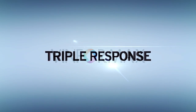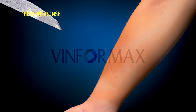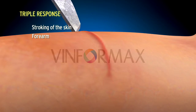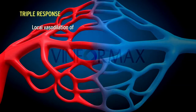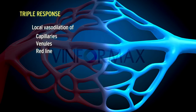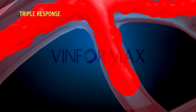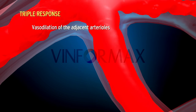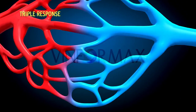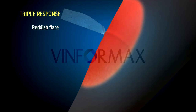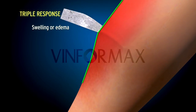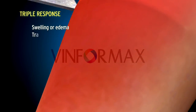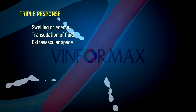Triple response is the demonstration of hemodynamic changes in inflammation. It involves firm stroking of the skin of the inner aspect of the forearm with a blunt point. The reaction consists of: a red line — local vasodilation of capillaries and venules appearing within a few seconds; a bright reddish flare or flush surrounding the red line due to vasodilation of adjacent arterioles; and a wheal — swelling or edema of the surrounding skin due to transudation of fluid into the extravascular space.